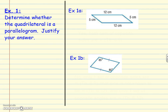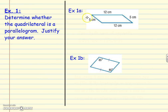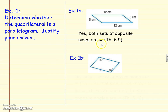Example 1: Is this a parallelogram? Justify your answer. Looking at the sides, I notice that both sets of opposite sides are congruent — that's exactly the hypothesis of Theorem 6.9. So yes, it is a parallelogram by Theorem 6.9.